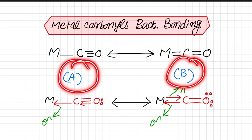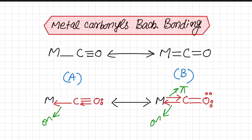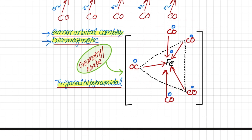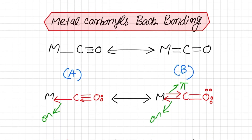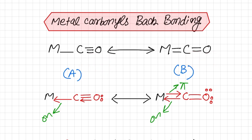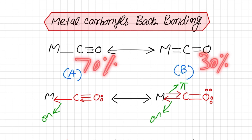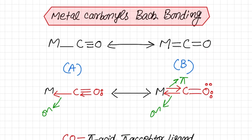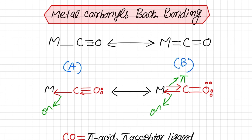Since both A and B forms are in resonance, there is a shift in the dominant structure. For example, it is possible that the complex is 100% A form and 0% B form, or 50% A and 50% B, or perhaps 70% A and 30% B. It depends on the factors that determine whether A or B structure is dominant. What are the factors that cause either A or B to be dominant, or both to contribute equally? These factors will be discussed in the next lecture.